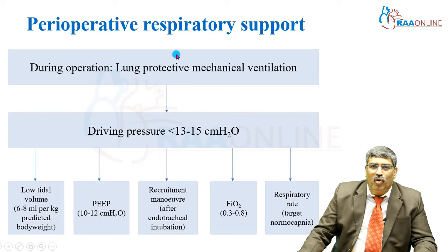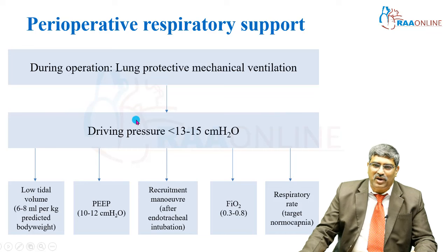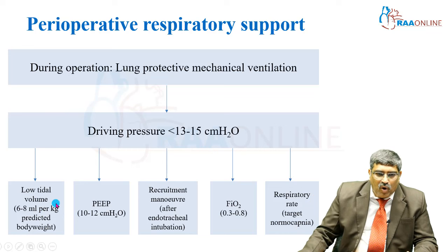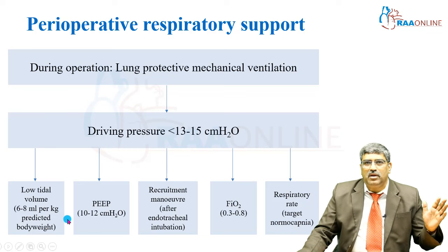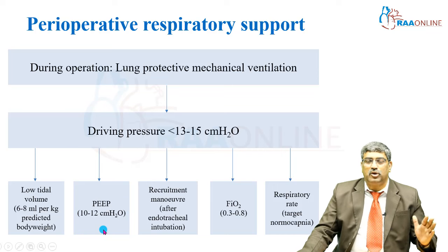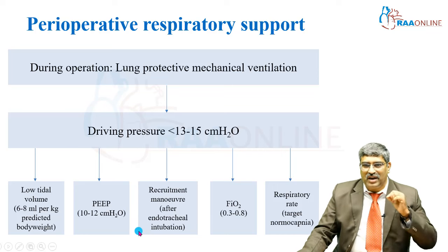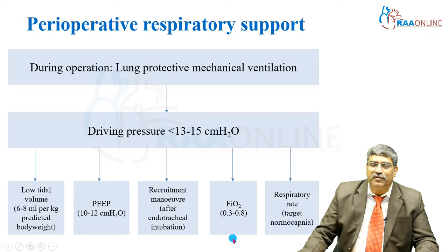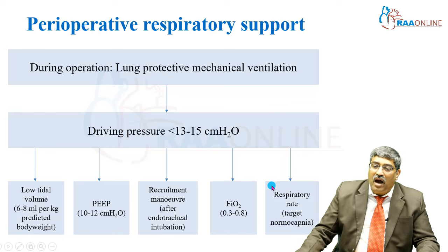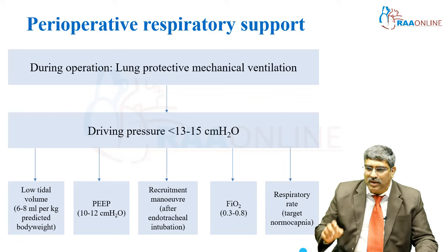During surgery, use lung-protective mechanical ventilation. The driving pressure should be between 13 to 15 cmH₂O, low tidal volume of 6 to 8 ml/kg, PEEP of 10 to 12 cmH₂O. Use recruitment maneuver after endotracheal intubation, FiO₂ 0.3 to 0.8 depending on oxygenation status, and adjust respiratory rate to target normocapnia.